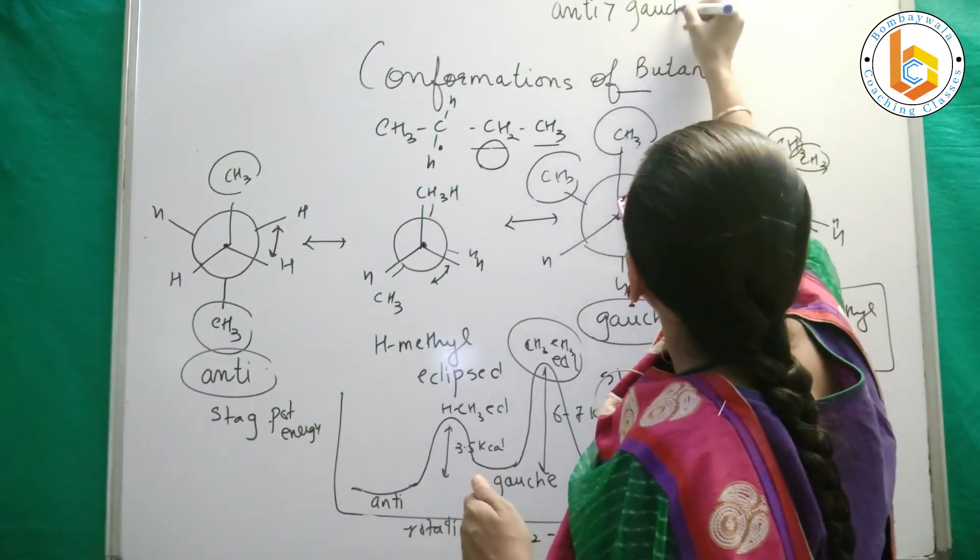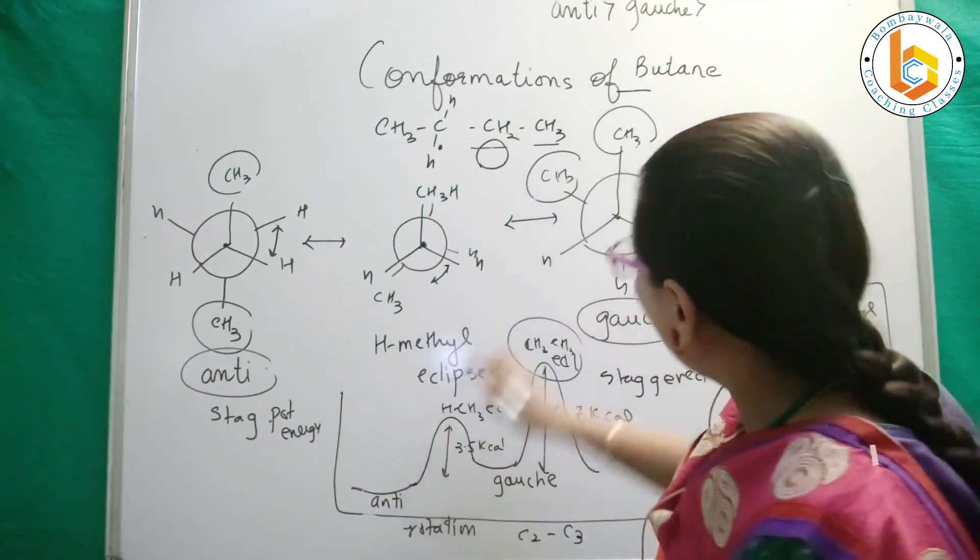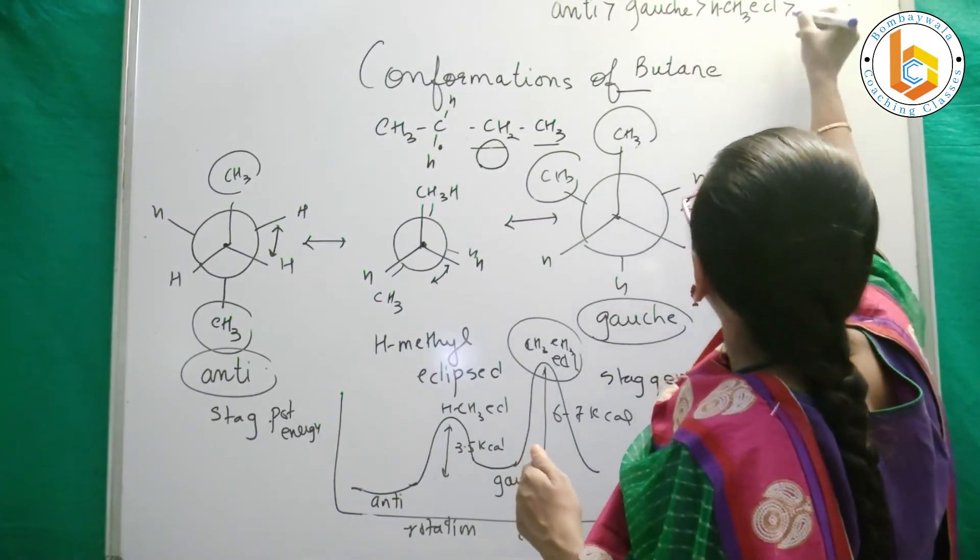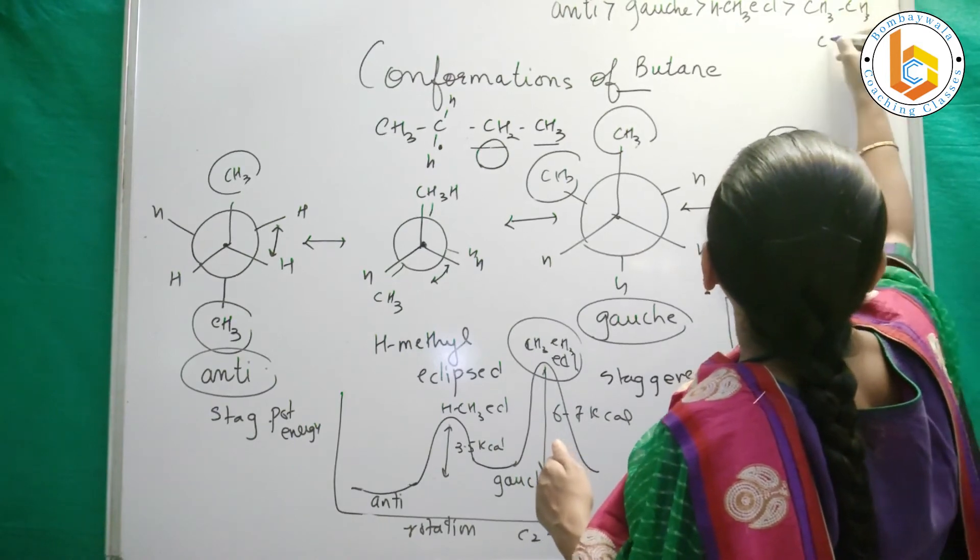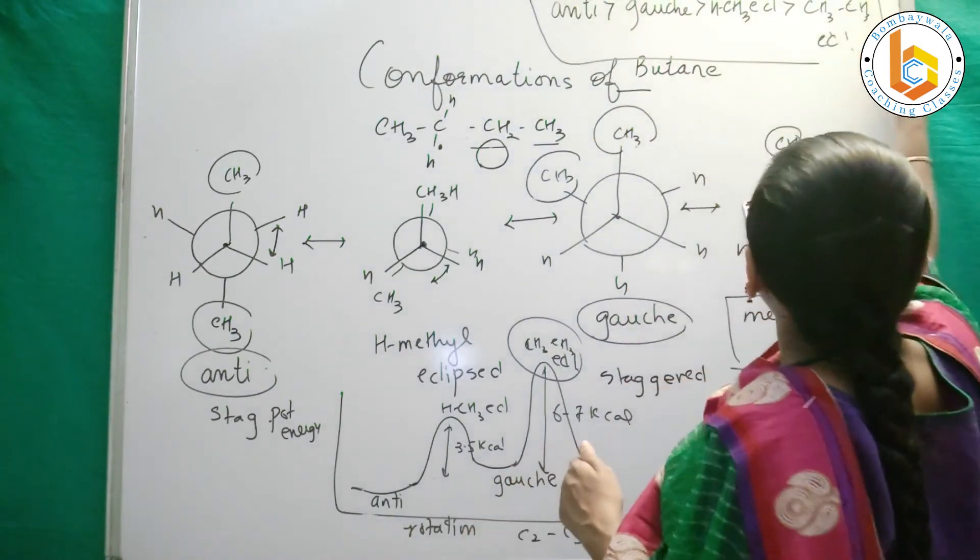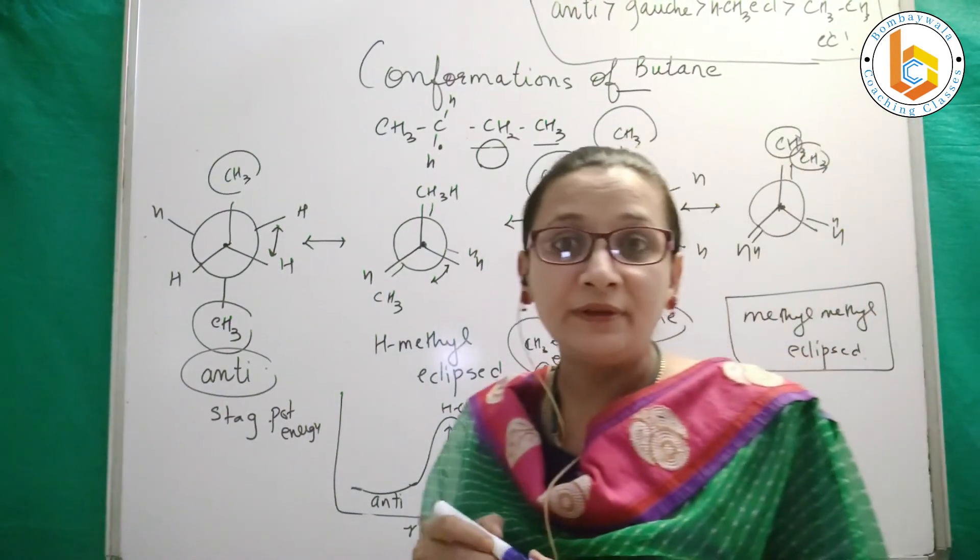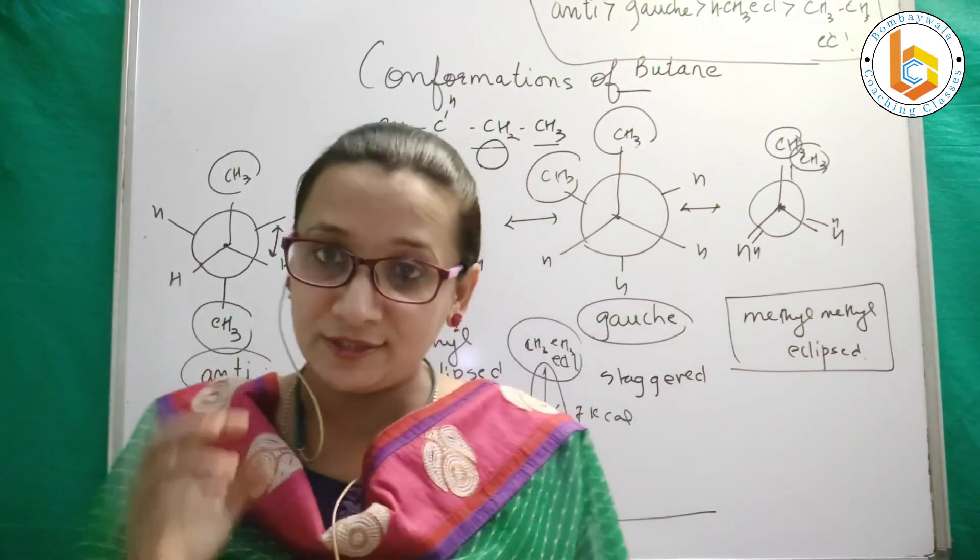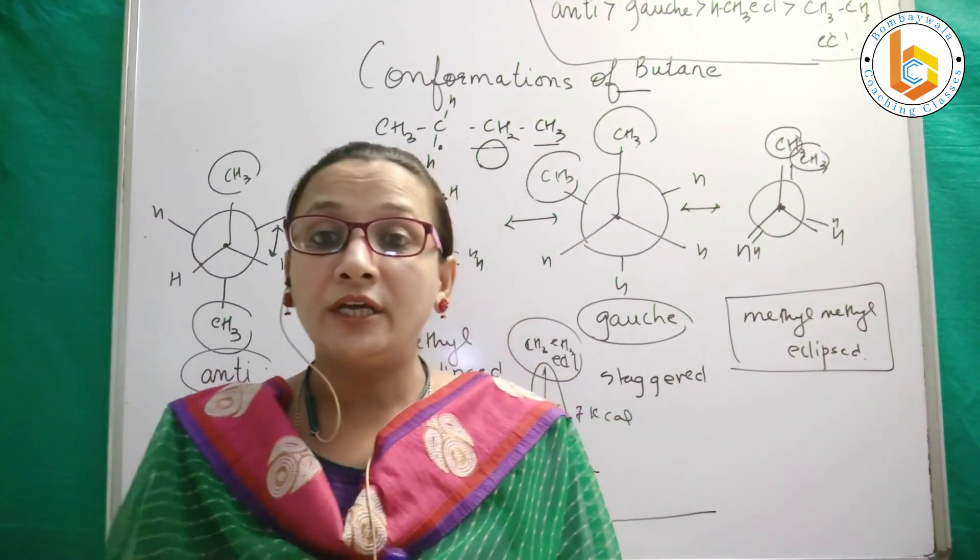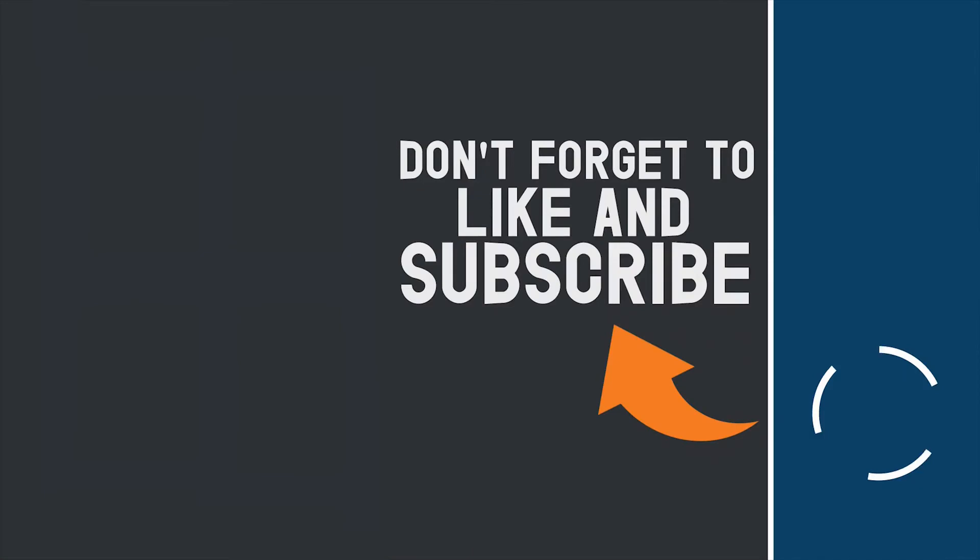Then is gauche form, then you have hydrogen methyl eclipsed, and finally you have methyl methyl eclipsed. Such a sequence can be asked in your national entrance exams like GPAT. We will be publishing more videos on the conformations of cycloalkanes. Keep watching and don't forget to subscribe to this channel.